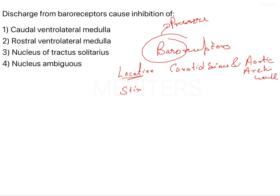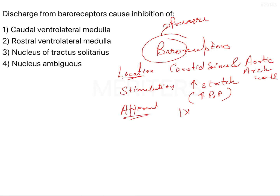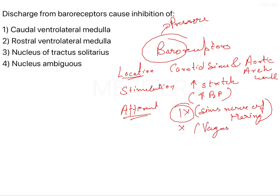Baroreceptors are stimulated by increased stretch, generally due to increased blood pressure, which causes stretching of the wall and stimulates these receptors. The afferent pathway — the sensory nerve carrying signals — is the ninth nerve (sometimes referred to as the sinus nerve of Hering). If a question comes, choose the ninth nerve. The tenth nerve, the vagus nerve, also carries afferent stimuli from the carotid sinus or aortic arch wall.